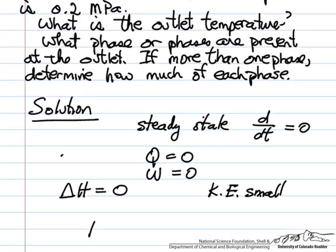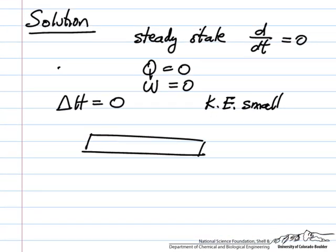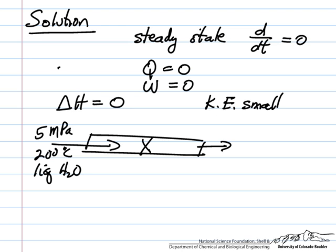So the system, for example a tube where we're feeding 5 megapascals, 200 degrees C. If we look in the steam tables for water, this is liquid water. The exit is at 0.2 megapascals and the question is what's the exit temperature.